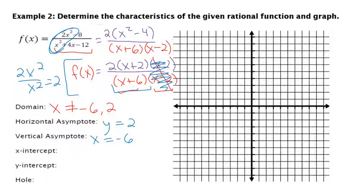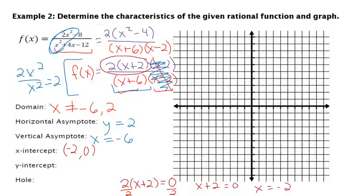For the x-intercept, I'm setting my y value to 0, and we're just going to set the top equal to 0. I could distribute, I could divide, they're all going to give us the same answer. We're going to get negative 2, so my x-intercept is negative 2, 0. My y-intercept is when you let the x be 0. This is the same as looking at the ratio of the coefficients, so that would be, in this case, 2 thirds.